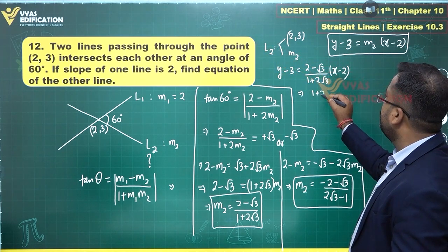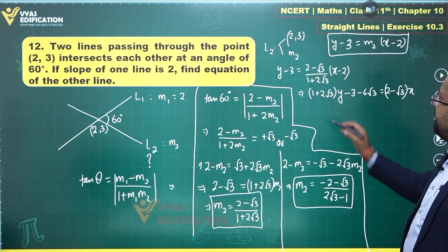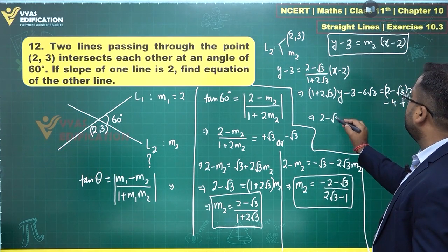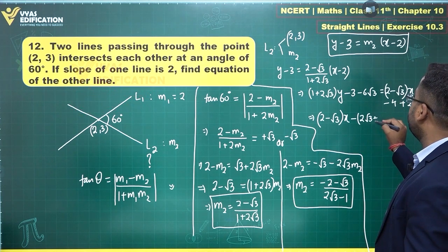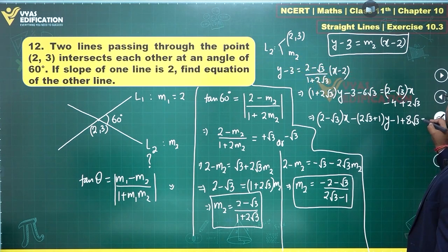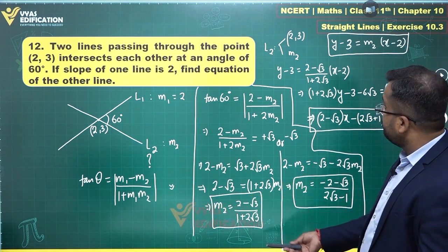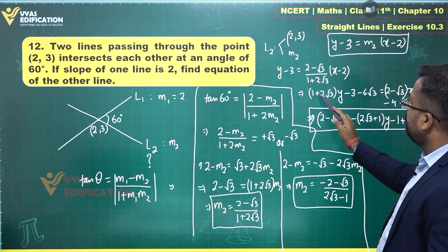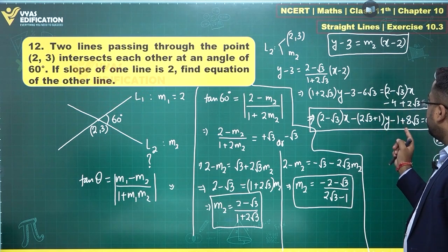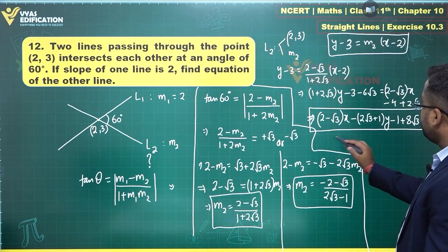Simplifying: (1 + 2√3)(y − 3) = (2 − √3)(x − 2). Expanding: (1 + 2√3)y − 3 − 6√3 = (2 − √3)x − 4 + 2√3. Rearranging everything to one side: (2 − √3)x − (1 + 2√3)y + (−1 + 8√3) = 0. This is the first equation.